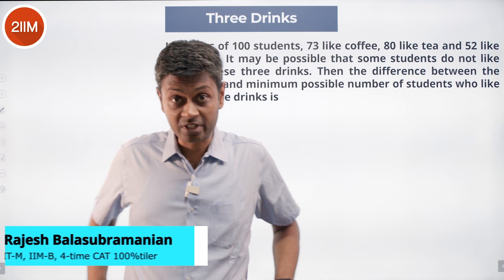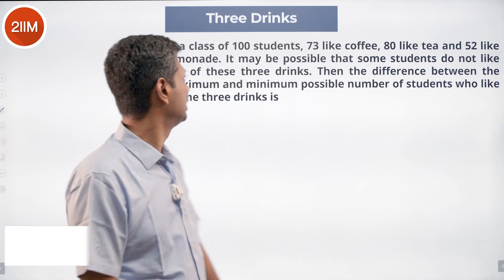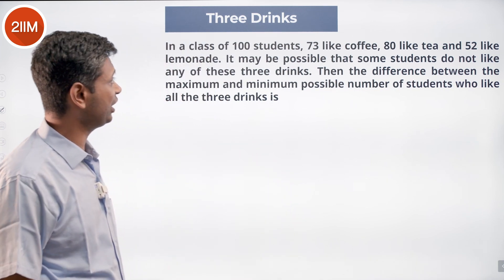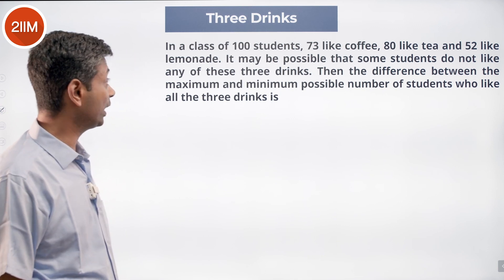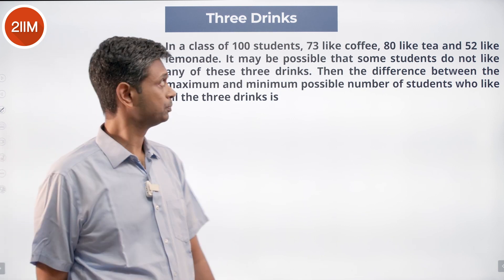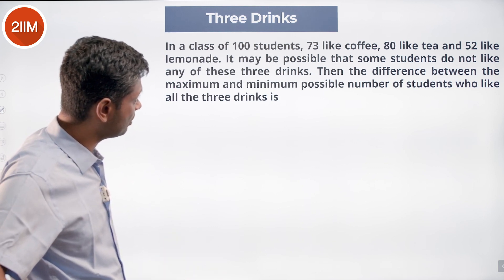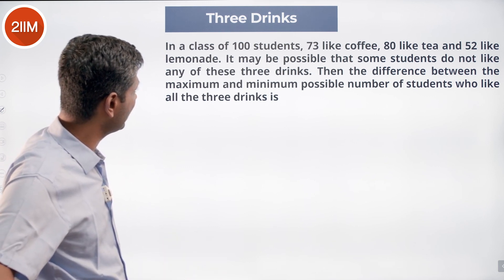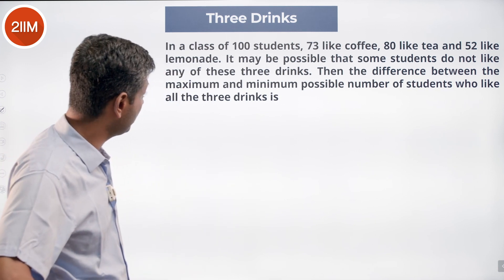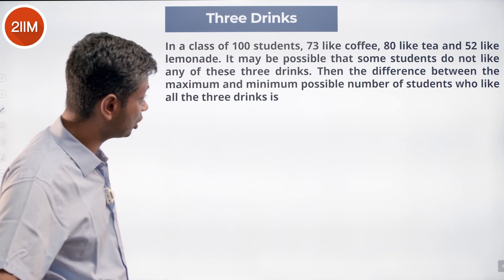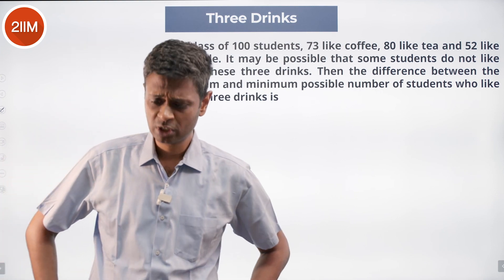We're going to do Raghu's favorite question using Raghu's method. In a class of 100 students, 73 like coffee, 80 like tea, and 52 like lemonade. It may be possible that some students do not like any of these three drinks. We need to find the difference between the maximum and minimum possible number of students who like all three drinks.